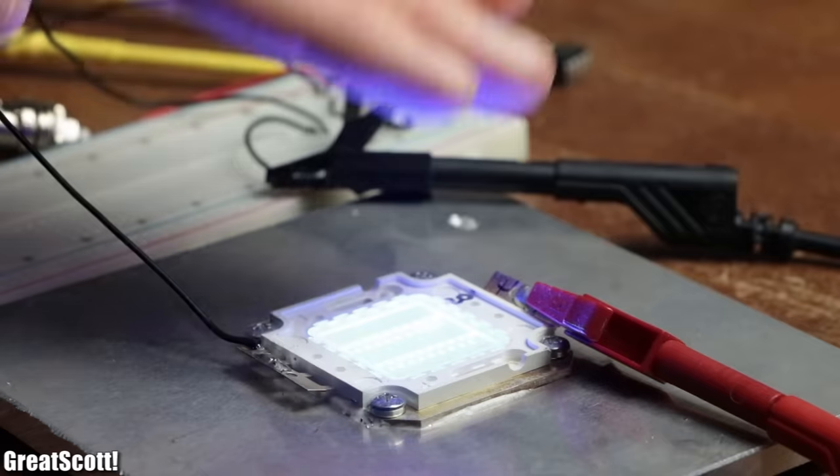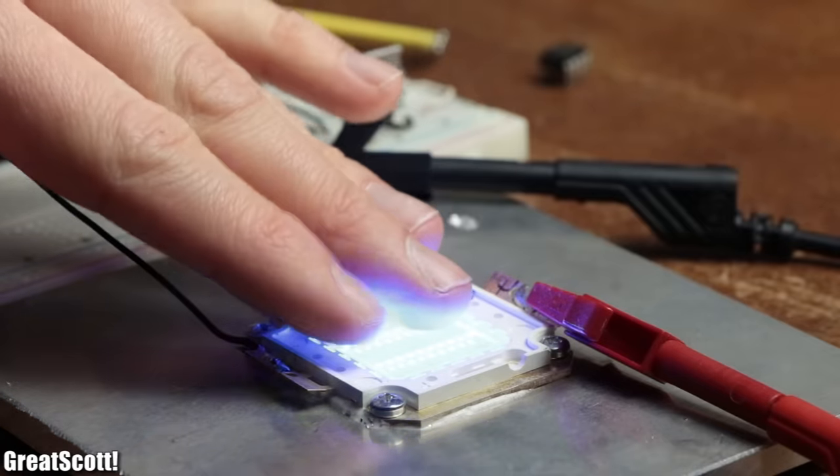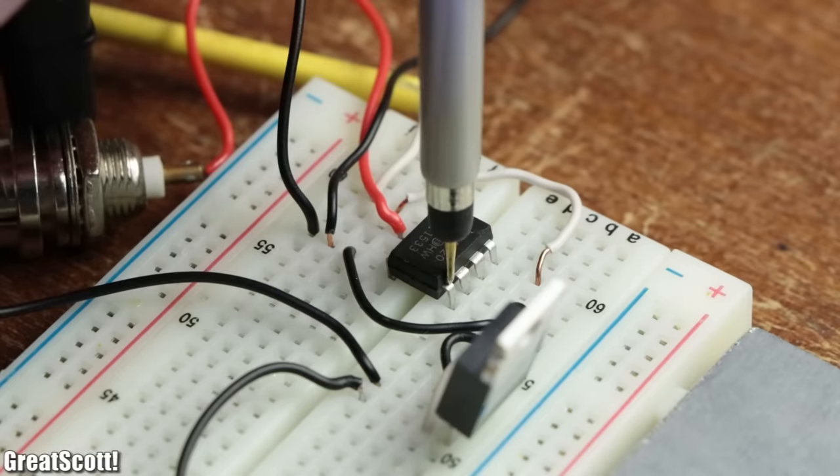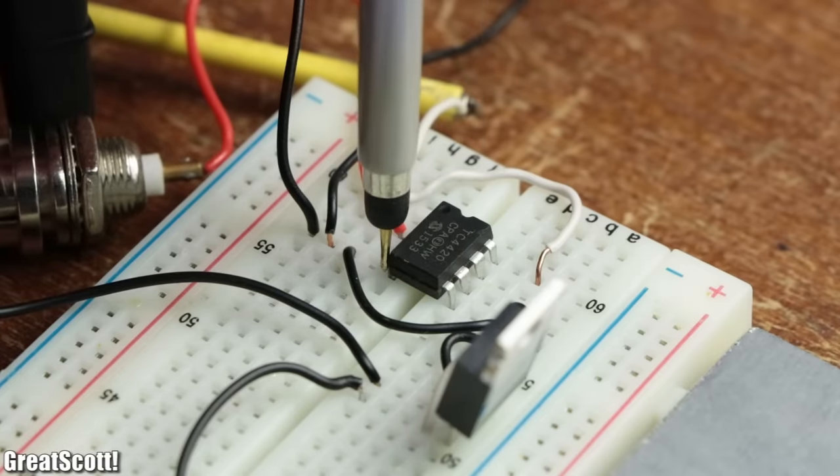After replacing it, the circuit worked fine once again. But this time I examined the pin's voltages of the IC with my oscilloscope to determine the culprit.